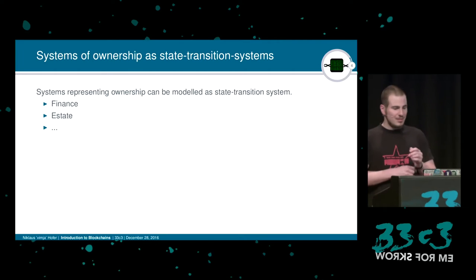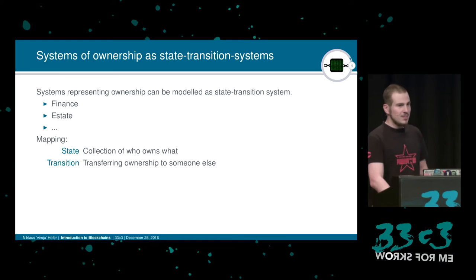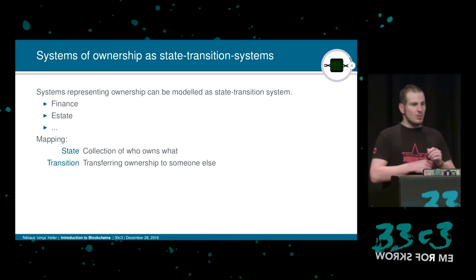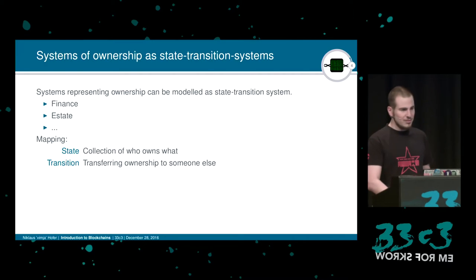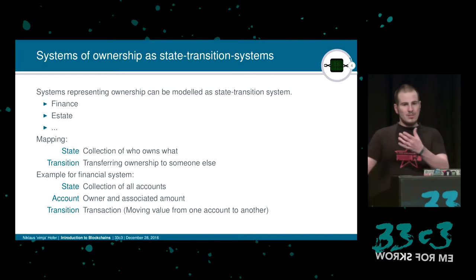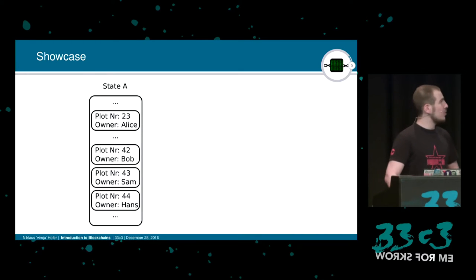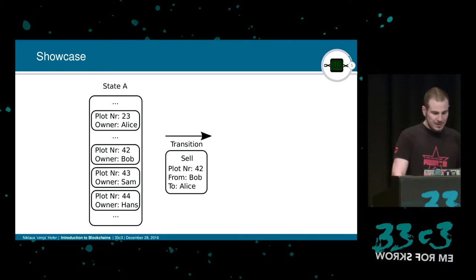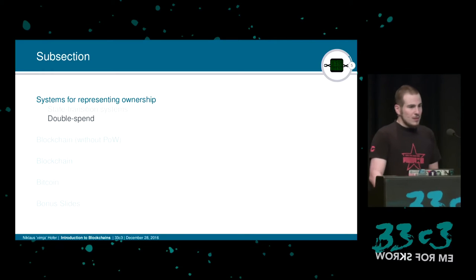Starting from the point that we can represent all of these systems as state transition systems — accounts for financial systems to manage money, or for systems managing real estate. The mapping usually works so that we have a state saying who owns what, and each transition of state leads to a new state. For example, in a financial system the state is the collection of all accounts saying which person owns how much money, and a transition is each transaction. On this slide you see that represented in real estate plots — assuming Bob sells his plot number 42, the system makes a transition to a new state where this change is represented.